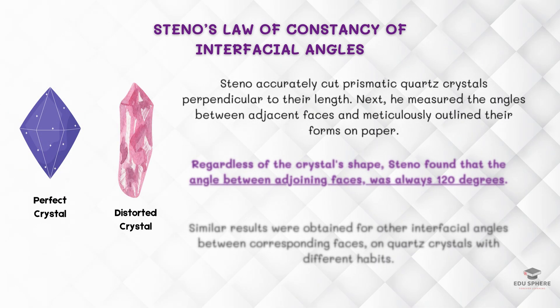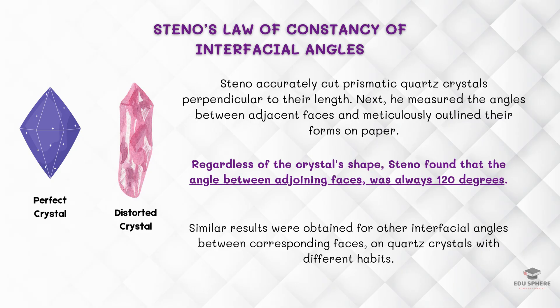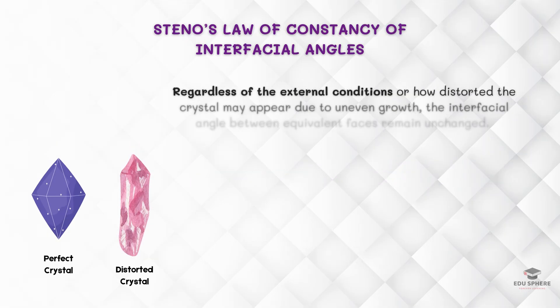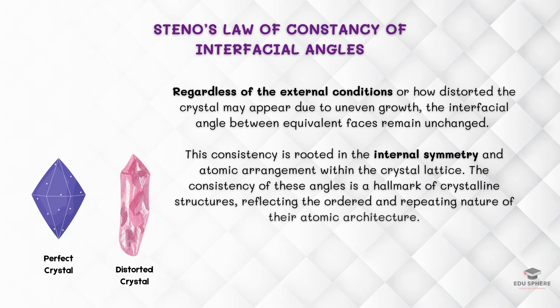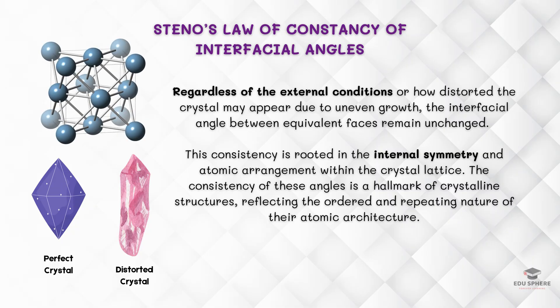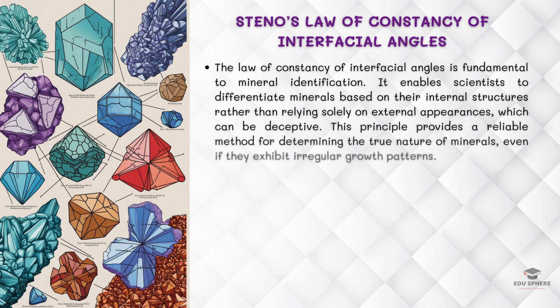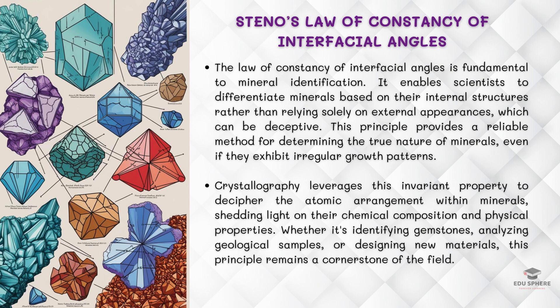Steno discovered this by measuring quartz crystals. He found that when measured at the same temperature, these interfacial angles did not change, even if the crystals grew under different conditions. This means that despite possible distortions during crystal growth, the interfacial angles remain the same. Suppose a crystal grows more in one direction due to an uneven supply of material — this might cause the crystal to appear distorted or irregular. However, despite this distortion, the interfacial angles between equivalent faces will remain constant, because the atomic structure that dictates these angles doesn't change with external conditions. This principle is crucial in crystallography because it allows scientists to identify minerals accurately and understand their internal structures, even when external appearances are different.